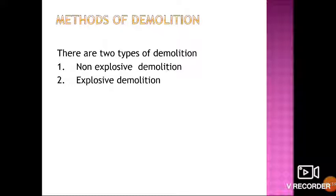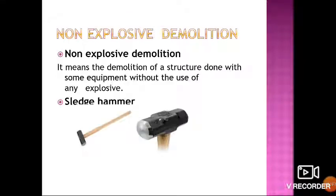There are two main methods of demolition. The first is non-explosive demolition and the second is explosive demolition. Non-explosive demolition means the demolition of a structure done with equipment, without the use of any explosion. One equipment used is the sledgehammer, which is used for removing a stone wall or single column. It consists of a long stem with a metallic head, used to give impact on the structure and cause demolition. It cannot be used for removal of large buildings.